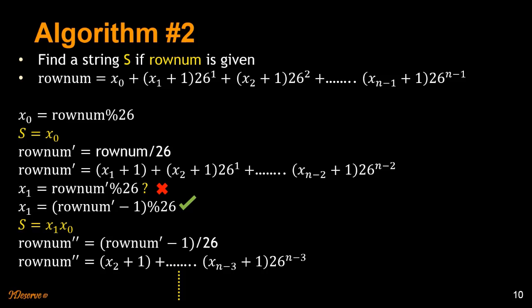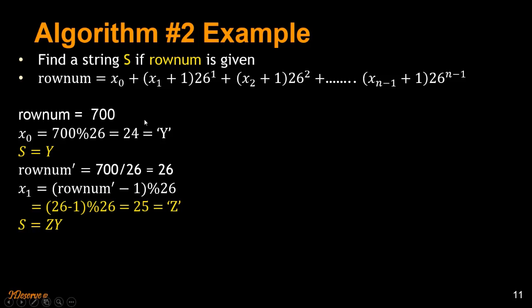So if you have row number equal to 700, you are first going to do a mod on 700. That will result in 24, which is equivalent to Y. So you have got the units place value, which is Y. Now what you are going to do is you are going to divide 700 by 26.